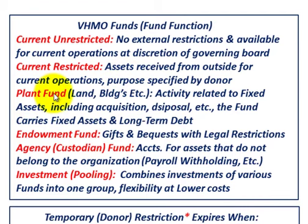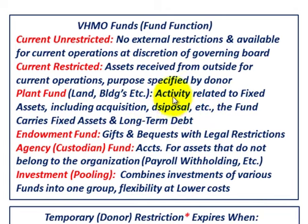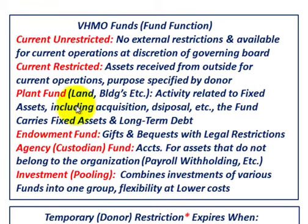Moving to the plant fund — land, buildings, and so forth — the activity is related to fixed assets, including acquisition and disposal. This fund carries both fixed assets and long-term debt. In governmental accounting, fixed assets and long-term debt are carried outside the funds, but in not-for-profit accounting for VHWOs, you include them in the plant fund itself, along with depreciation and any long-term debt.